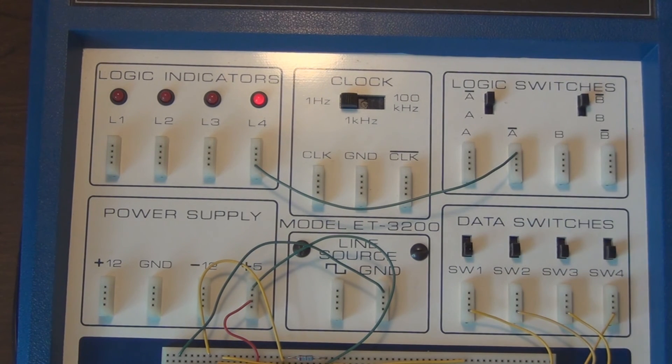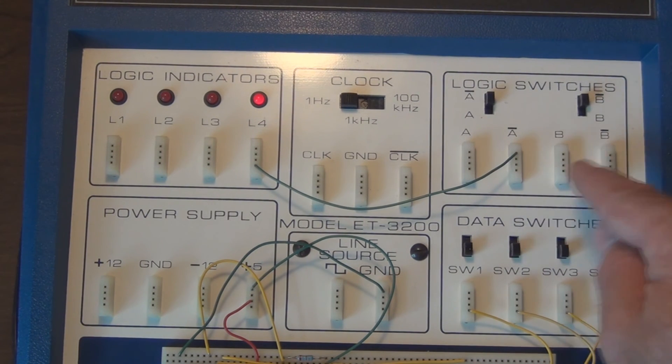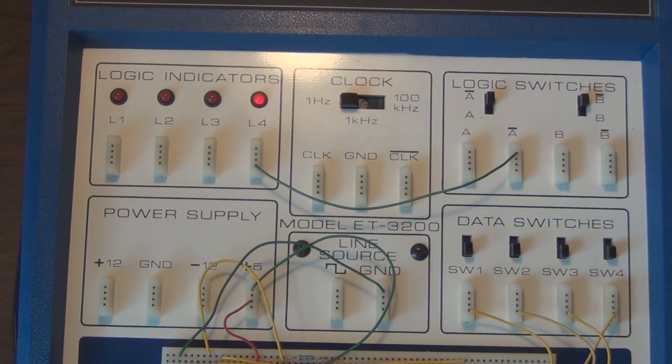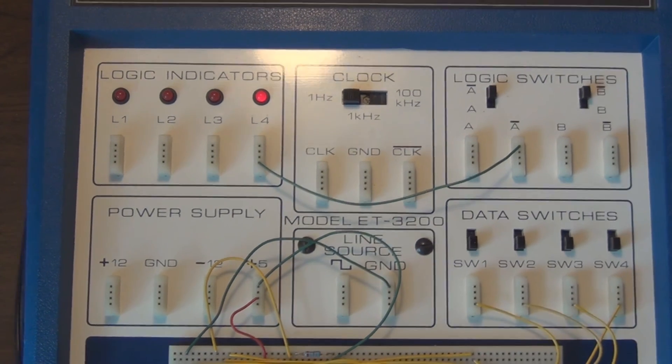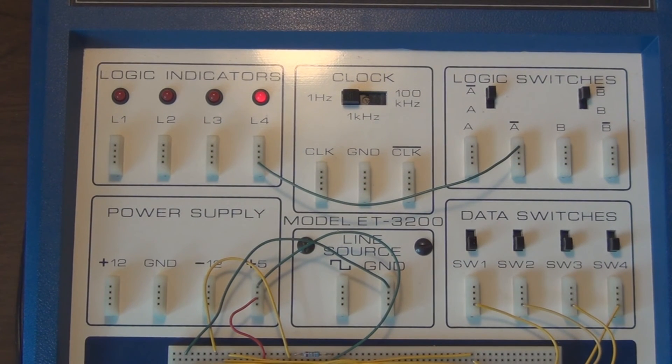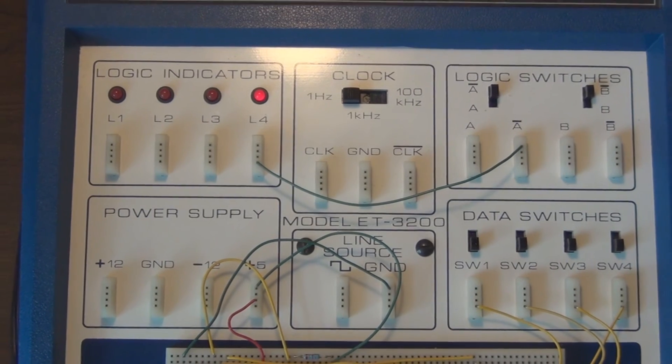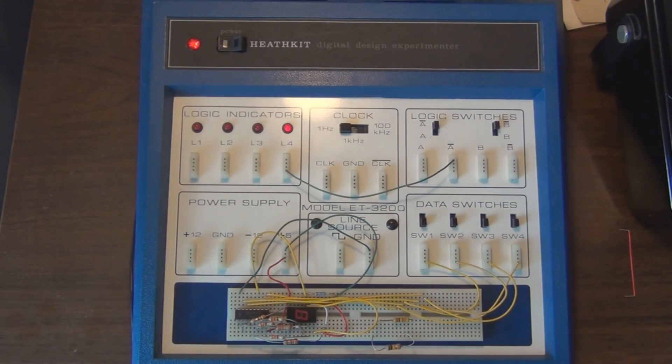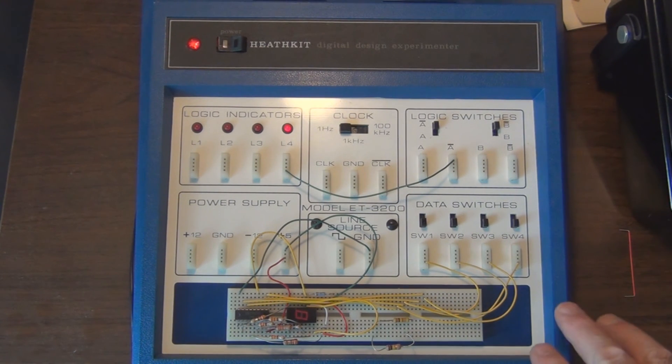So yeah, this is the Heathkit digital design experimenter. It's a nice little platform to help you with learning digital electronics. You don't really need the Heathkit course material, but the course material is designed around this platform.